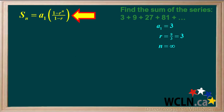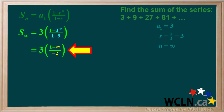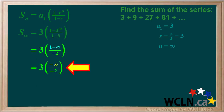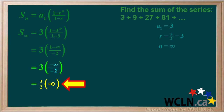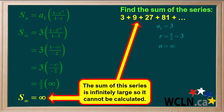We'll start by writing the equation for the sum of a geometric series. Now we'll substitute 3 for a1, 3 for r, and infinity for n. 3 to the power of infinity is infinitely large, or infinity, and 1 minus 3 is negative 2. 1 minus infinity is infinitely small, or negative infinity. Negative infinity over negative 2 is the same as positive infinity over positive 2, so the expression can be written as 3 over 2 times infinity. Any positive number times infinity is infinitely large, or infinity. Because the sum of this series is infinitely large, it cannot be calculated.